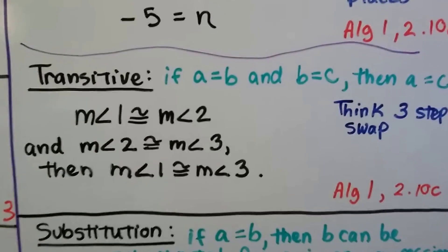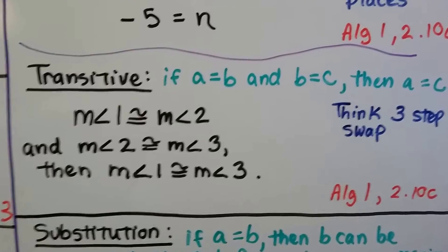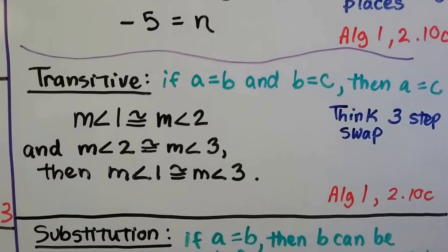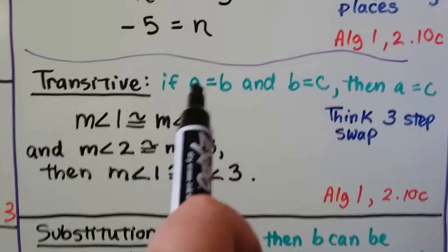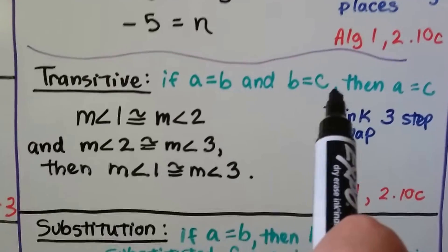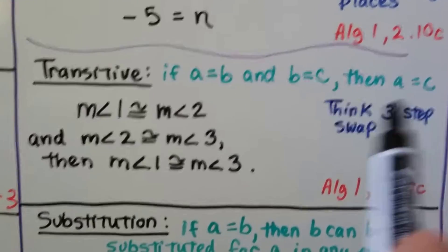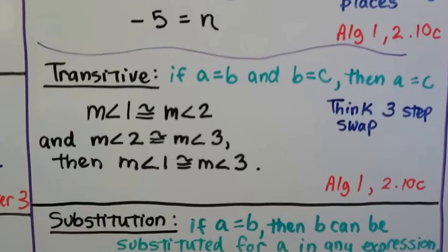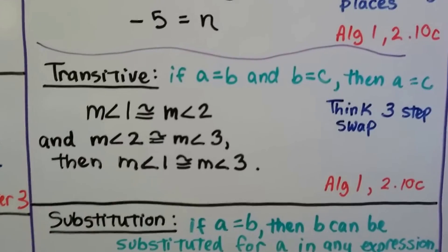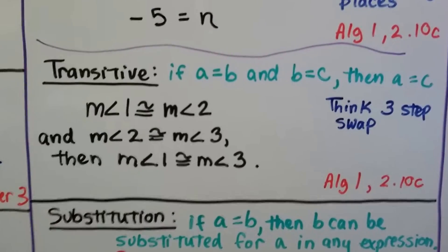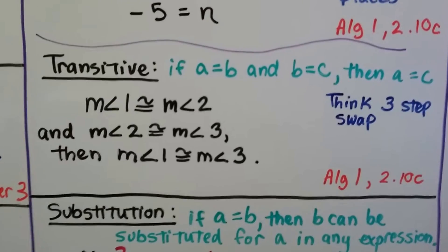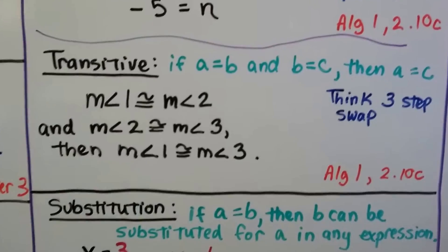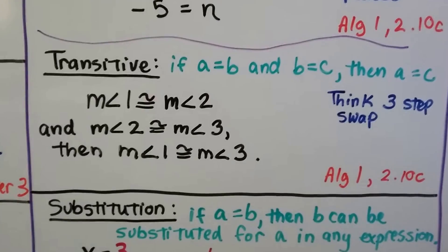For the transitive property, if A equals B and B equals C, then A equals C. If A and B are the same value, and B is the same value as C, then A is the same value as C. For example, if the measure of angle 1 equals the measure of angle 2, and the measure of angle 2 equals the measure of angle 3, then measure of angle 1 equals measure of angle 3. It's like a three-step swap.